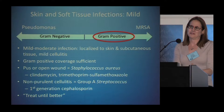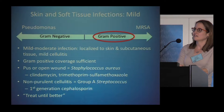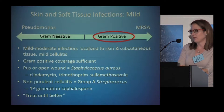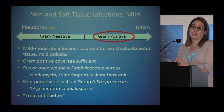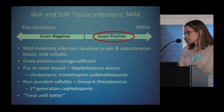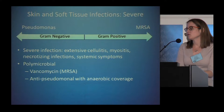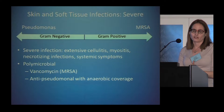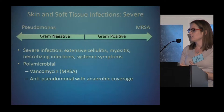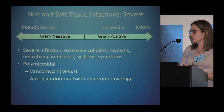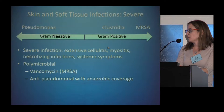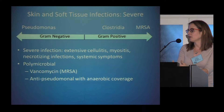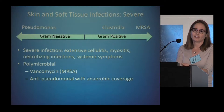There's no fixed duration of therapy — no set five, seven, or fourteen days. I treat until it's better; most ID people make an educated guess on the best course. For severe infections, you start thinking in terms of polymicrobial infections — extensive cellulitis, myositis, necrotizing infections. You do have to think about clostridia with necrotizing infections. In the hospital, the easiest approach is vancomycin plus an anti-pseudomonal agent with anaerobic coverage, something like piperacillin-tazobactam.